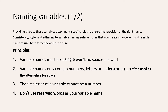Rule number two: variable names can only contain numbers, letters, or underscores. So stick to the rule — if you have a variable 'apple box', call it 'apple_box'. Don't use a space. Number three: the first letter of a variable cannot be a number. Basically, just don't put a number at the beginning of your variable name.